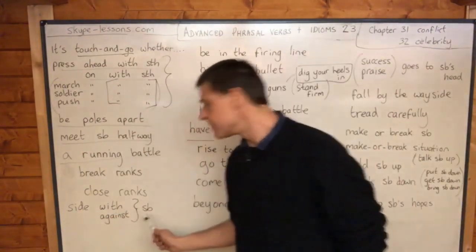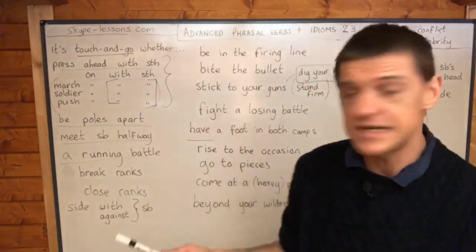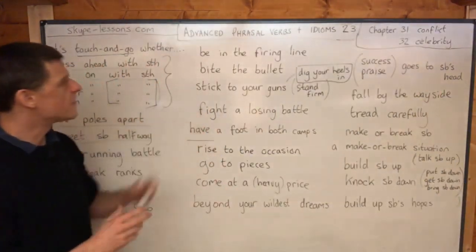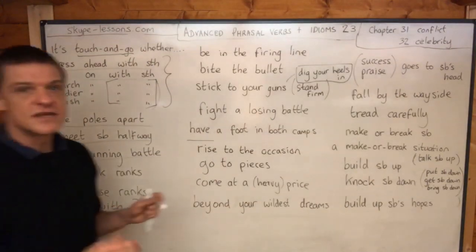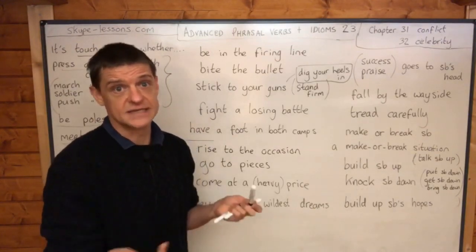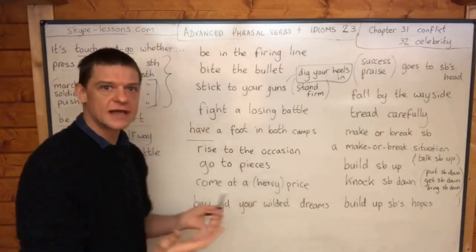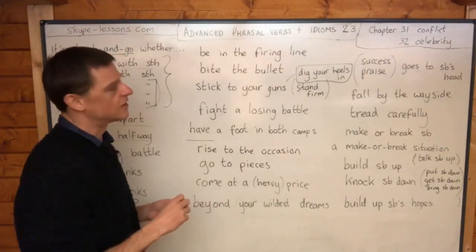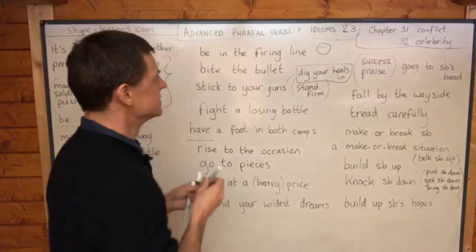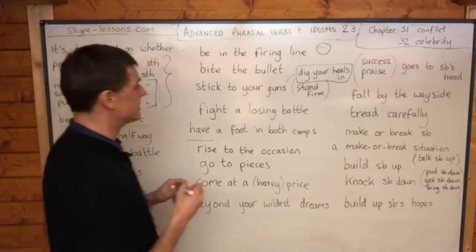If you 'side with somebody' you're on their side, and if you 'side against somebody' you're against them — nice and easy phrasal verbs. If you are 'in the firing line', that means your neck is on the line in some kind of way. It means you're in danger — you're likely to be attacked or targeted. It's a negative expression. 'Your neck is on the line' is another very similar idiom.